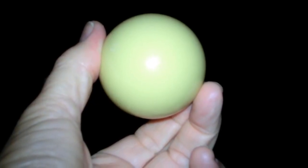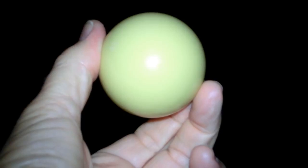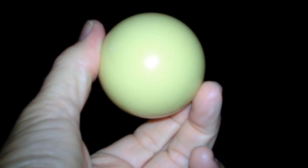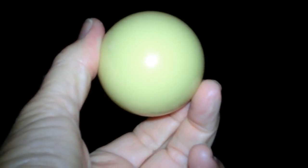This billiard ball is lighted from behind the camera, just as the moon is lighted from behind us when we see the full moon. Notice that toward the edge, the ball becomes darker and the edge is indistinct.